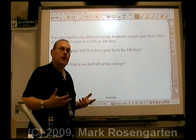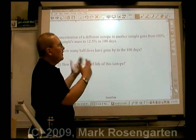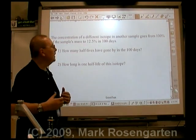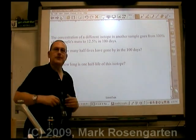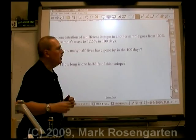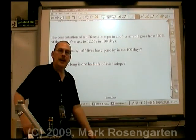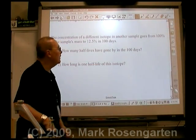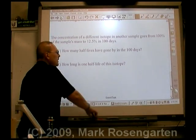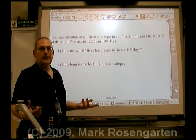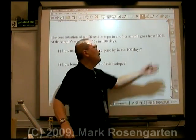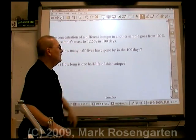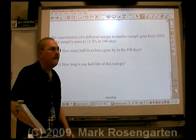Let's say we have an isotope going from 100% of its potential to decay to 12.5% of its potential to decay over the course of 100 days. We want to find out how long the half-life is. What you need to know is how many half-lives have gone by — how many times has 100% been cut in half before we get to 12.5%?